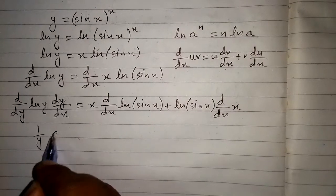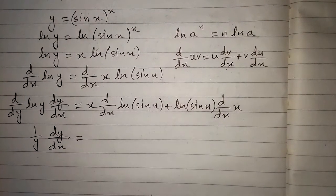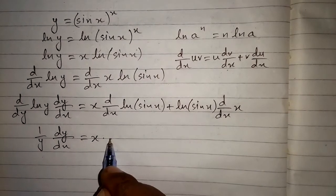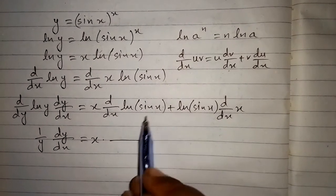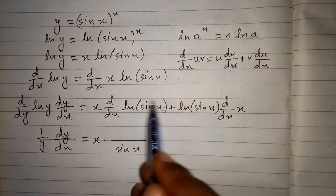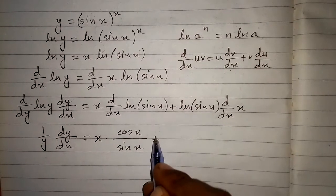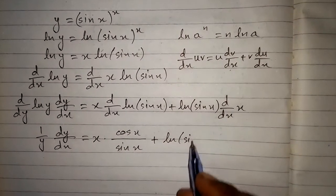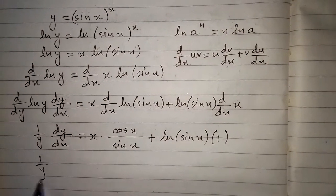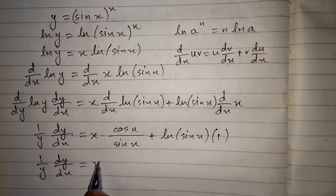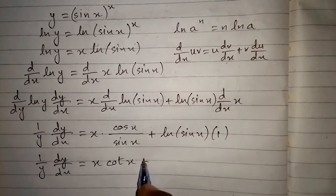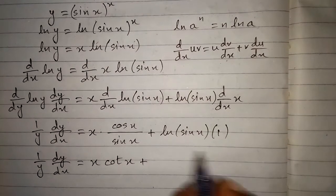The derivative of ln y gives 1 over y times dy by dx. On the right side, the derivative of ln of sin x is 1 over sin x times the derivative of sin x, which is cos x. So we get x times cos x over sin x, plus ln of sin x times 1, which is simply ln of sin x.